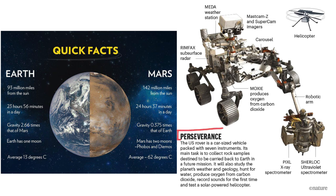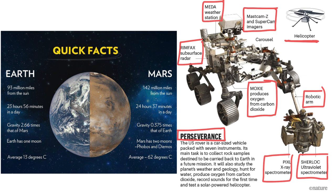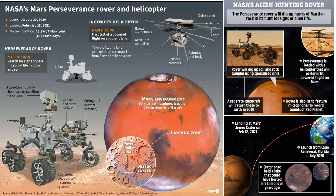The equipment placed in Perseverance includes: MOXIE, which produces oxygen from CO2; a robotic arm; an X-ray spectrometer; an ultraviolet spectrometer; MASTCAM-Z; SuperCam imager; surface radars; and weather stations. The Ingenuity Mars helicopter is carried with Perseverance and has recently taken autonomous flight. Comparing Earth and Mars: Mars has two major satellites, Phobos and Deimos, while Earth has one. The average temperature of Earth is 13°C but that of Mars is minus 62°C. Perseverance landed near Jezero Crater, which is the landing site.